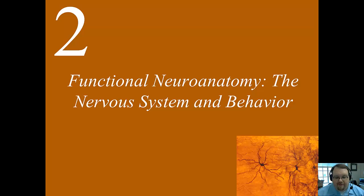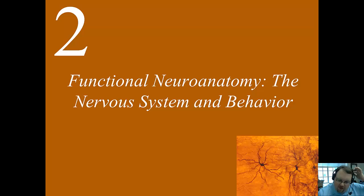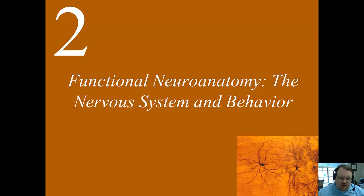Welcome to our fourth and final lecture for Chapter 2. We're going to talk a little bit more about the structures in the brain, but then we're also going to get into how those structures are maintained — so blood flow — and talk about different imaging techniques that are used to look at both the structure and the function of the brain.